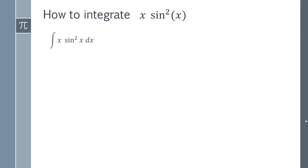So we can do some substitution using a trig identity to make it a bit easier. We're going to use the fact that sine squared x is 1 minus cos 2x over 2.